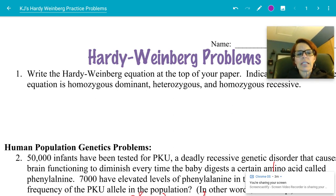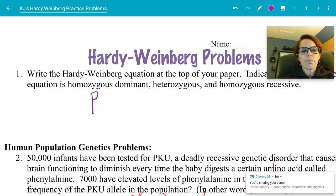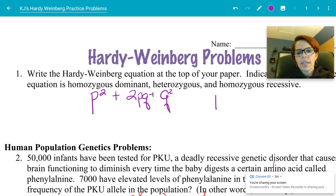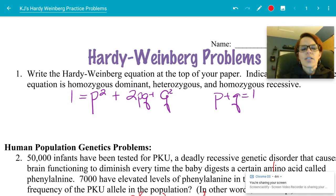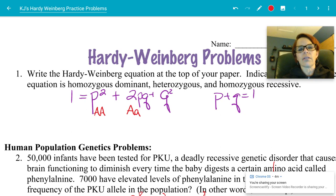Problem number one says to write the Hardy-Weinberg equation at the top of your paper. The equation is p squared plus 2pq plus q squared, when p plus q equals one. P squared represents the homozygous dominant — two capital letters. The 2pq part represents the heterozygote — one big and one little. And q squared is for the homozygous recessive — two little ones.